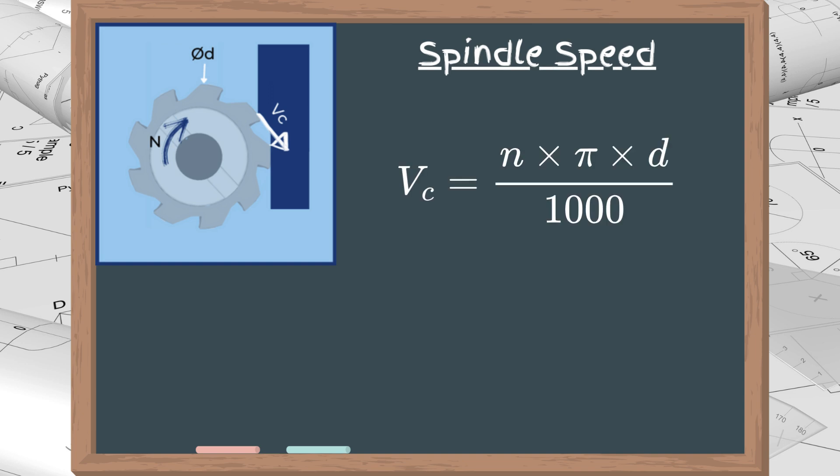The same formulas used for the cutting speed are used here. We only need to solve the previous equation for n, which gives us 1000 or 12, depending on the unit, times Vc divided by pi times d.